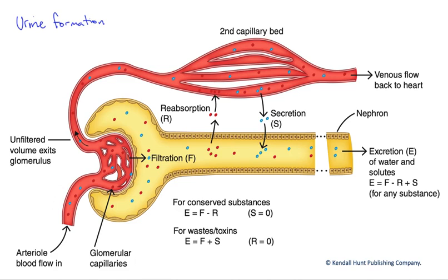In this schematic diagram, we want to look at the steps involved in urine formation. We're going to look at the filtration of plasma into the nephron — that's the structure in yellow here — it's a tubular structure, and the blood flow that supplies it, shown here in red.